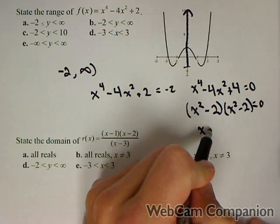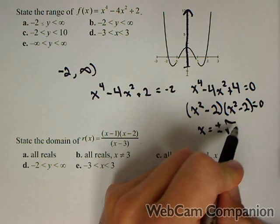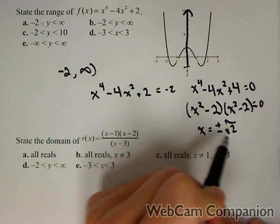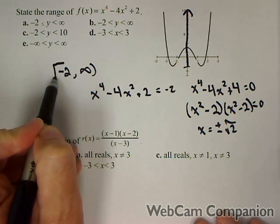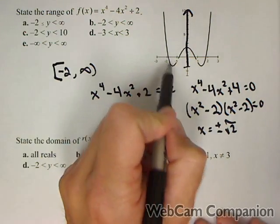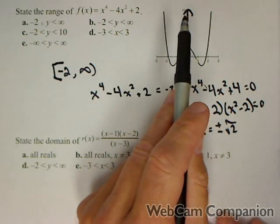They're at positive and negative root two. And all that does is that confirms that we can get negative two as an output. So we do want to include it. We can see from the graph pretty clearly it's from negative two up.